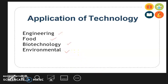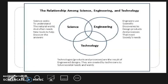Let's check the relationship among science, technology, and engineering. This is an example of a Venn diagram. We will try to check the similarities and differences. Science seeks to understand the natural world.